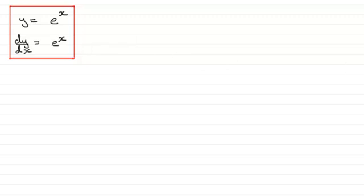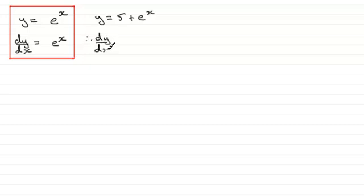Let's take a very basic example first of all. If you had y equals 5 plus e to the power x, we've got two terms here, so when it comes to differentiating this we differentiate each term. Differentiating the constant 5 gives us 0, and differentiating e to the power x, well according to this result it's going to be e to the x, so the result is e to the power x.